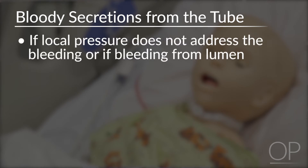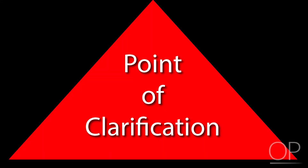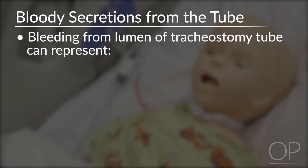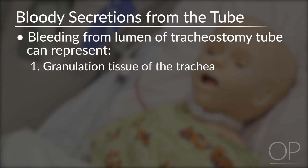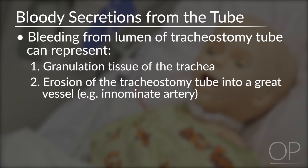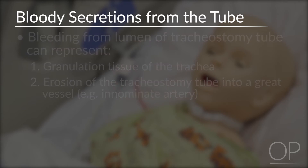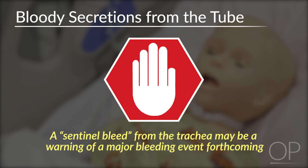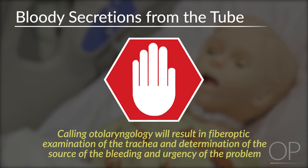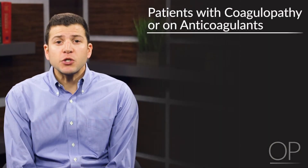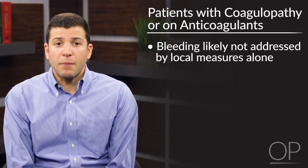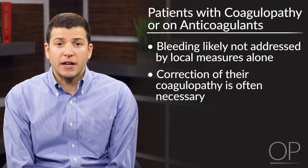If local pressure alone doesn't address the bleeding, or if there's active bleeding coming from the lumen of the tracheostomy tube, call otolaryngology. Point of clarification: bleeding from the lumen of the tracheostomy tube can represent granulation tissue of the trachea, possibly from tracheal infection, inflammation, or overzealous suctioning, or erosion of the tracheostomy tube into a great vessel such as the innominate artery. In this case, a sentinel bleed from the trachea may be a warning of a major bleeding event forthcoming. Calling otolaryngology will result in fiberoptic examination of the trachea and determination of the source of the bleeding and urgency of the problem. In patients with a coagulopathy or on anticoagulants, bleeding will likely not be addressed by local measures alone, and correction of their coagulopathy is often necessary.